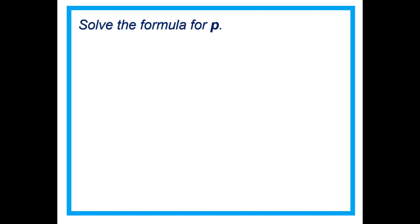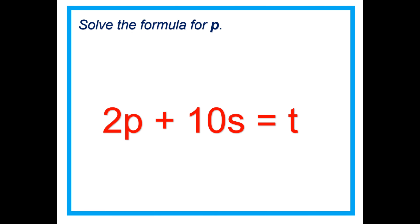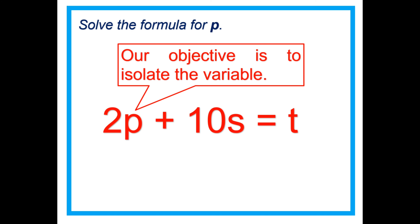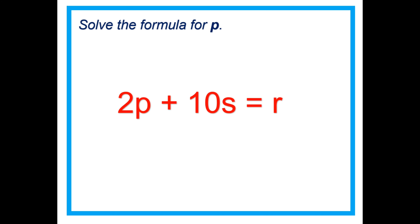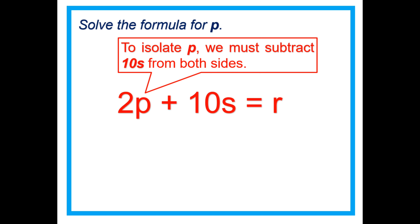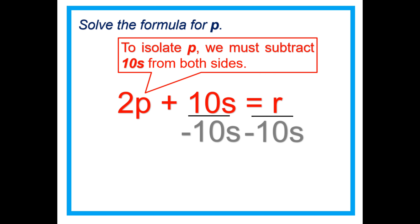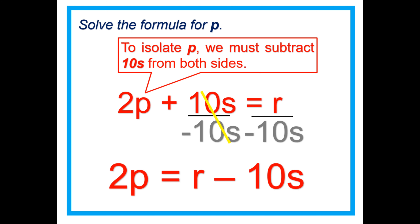Let's answer this. Solve the formula for P: 2P plus 10S equals R. Our objective is to isolate the variable P. To isolate P, we must subtract 10S from both sides — minus 10S on both sides. That cancels 10S, giving us 2P equals R minus 10S.